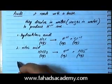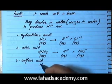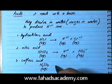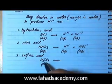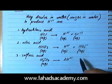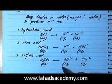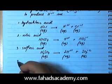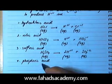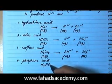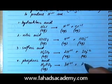At number three you have sulfuric acid. Sulfuric acid is H₂SO₄, and it's also aqueous. It's going to ionize and produce H⁺ ions — two H⁺ ions since it's H₂ — and one sulfate ion, which is SO₄²⁻. Both of these ions are aqueous. Then you have phosphoric acid, H₃PO₄, and whenever it's aqueous it's going to produce 3H⁺ and one phosphate ion, PO₄³⁻.